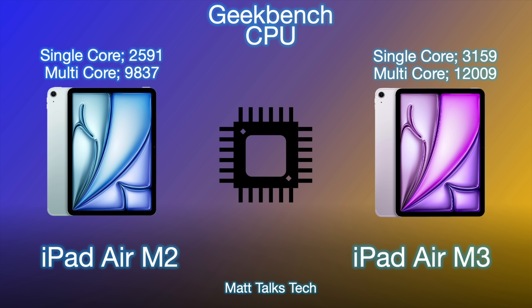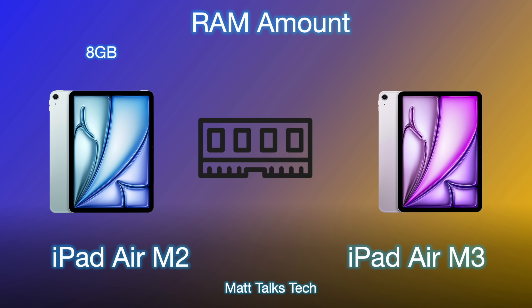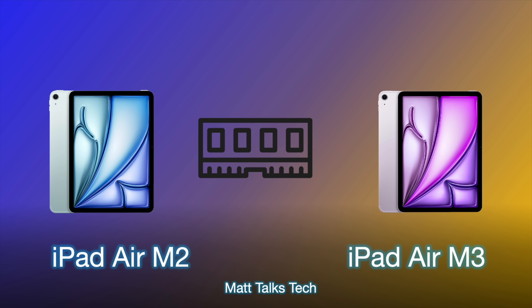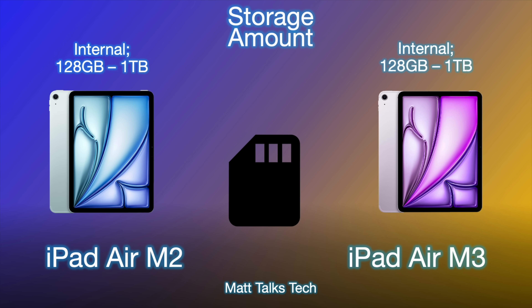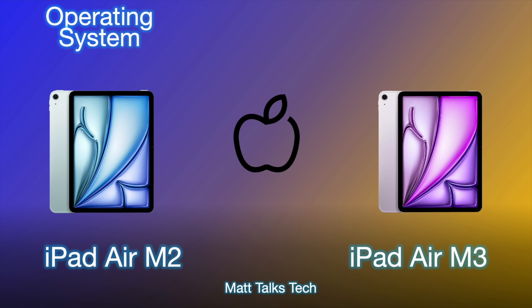For RAM, it's exactly the same — iPad Airs since the M1 have had 8 gigabytes of RAM, and there's no difference here. The M2 has 8GB and the M3 has 8GB regardless of configuration. Storage amounts are also identical across all four models, M2 and M3, 11 or 13 inch: 128 gigabytes up to 1 terabyte, with 256GB and 512GB options in between.